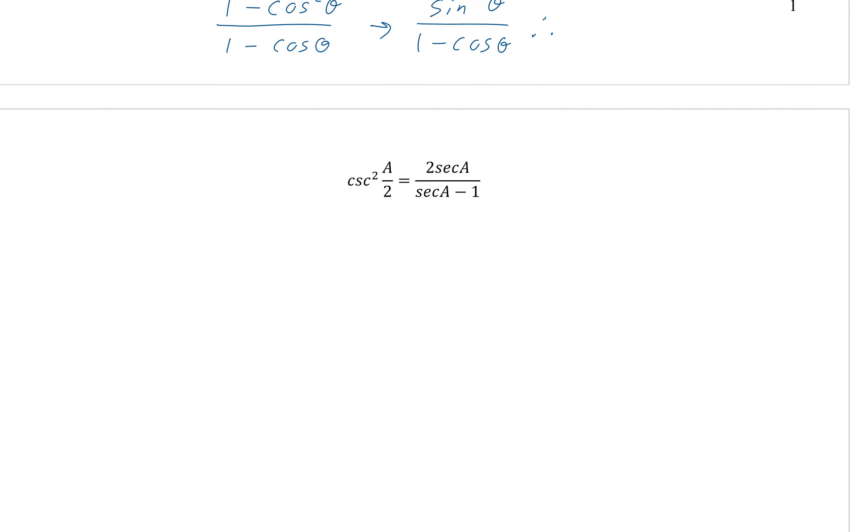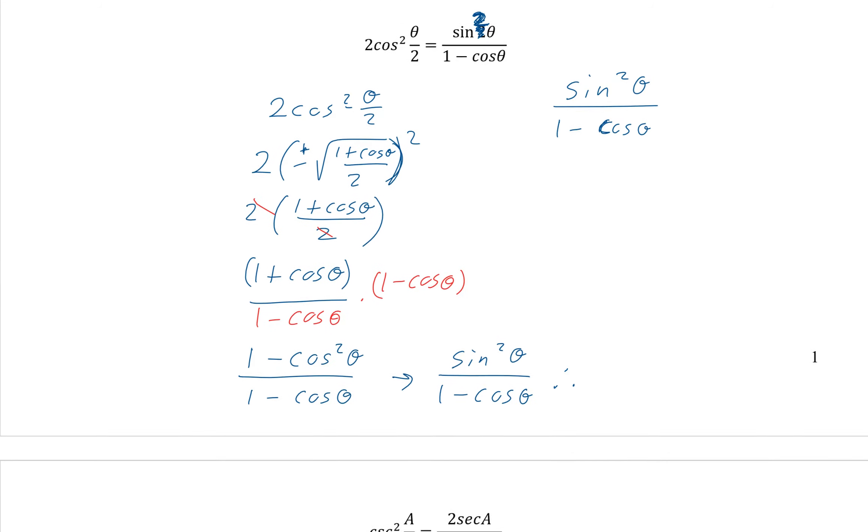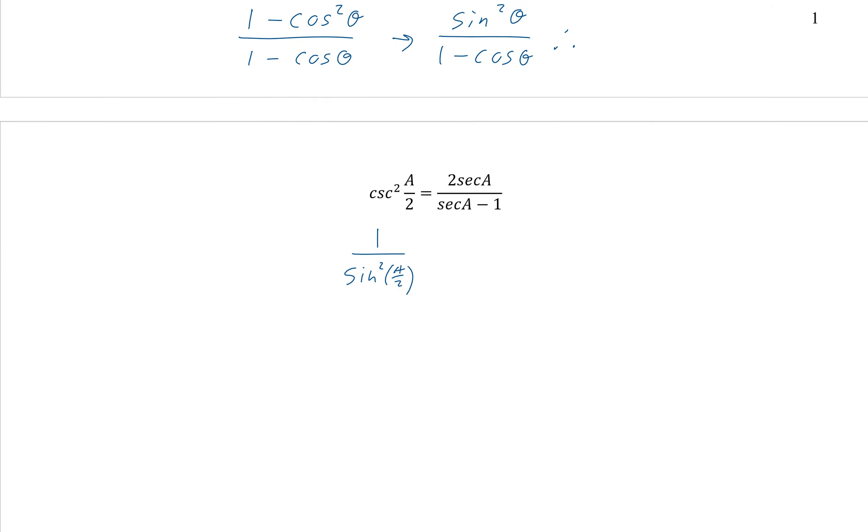So let's try another one. What if it's cosecant squared theta? Well, cosecant is the same as 1 over sine squared a over 2. So we're just going to use the sine. And the sine is the 1 minus cosine u. So the same thing.